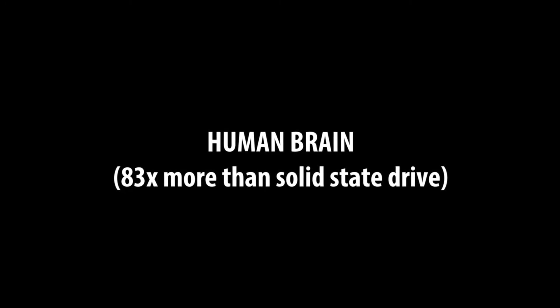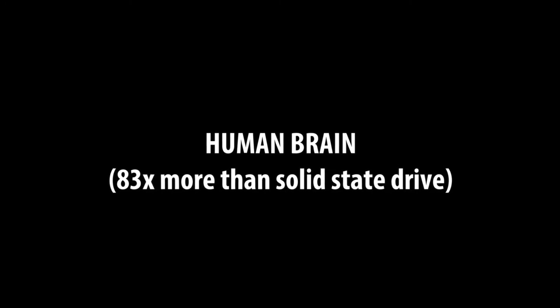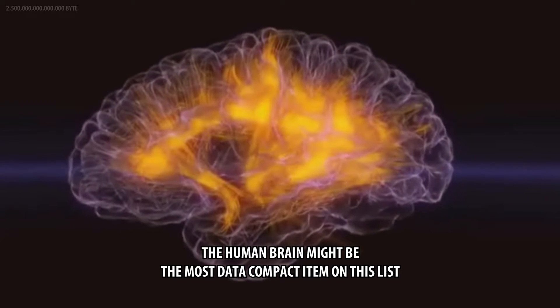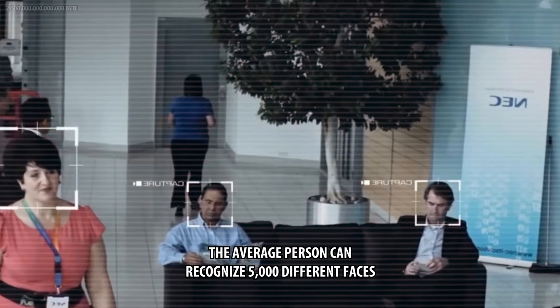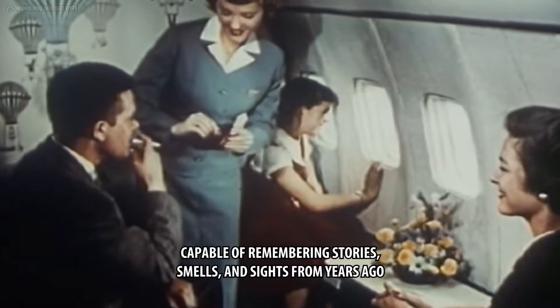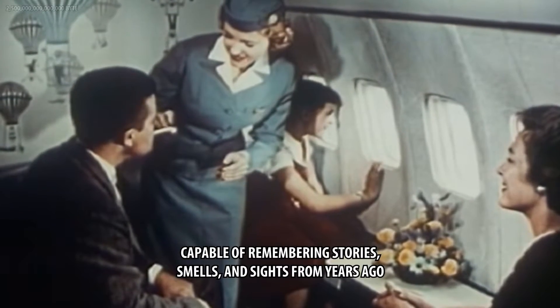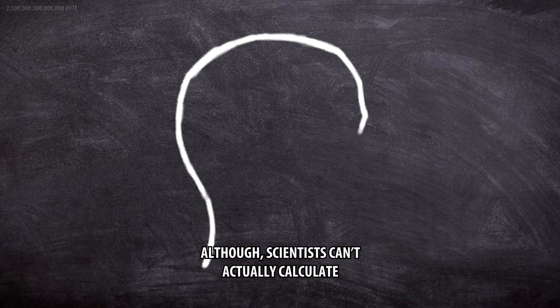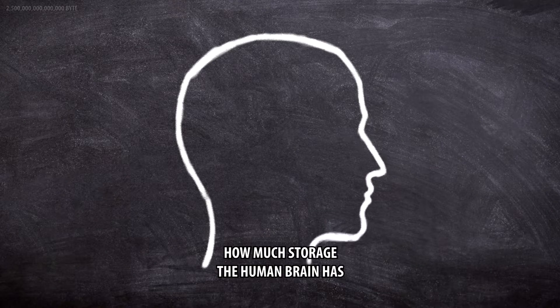Human brain, 83 times more than solid-state drive. The human brain might be the most data-compact item on this list. The average person can recognize 5000 different faces, capable of remembering stories, smells, and sights from years ago. Although scientists can't actually calculate how much storage the human brain has, some predictions indicate it could be up to 2.5 petabytes.